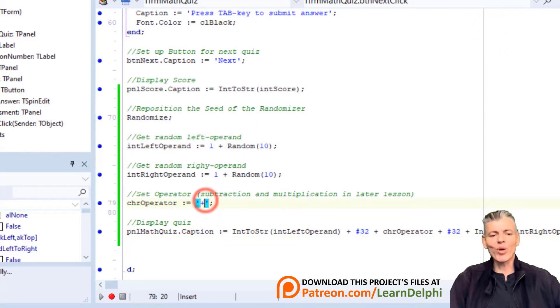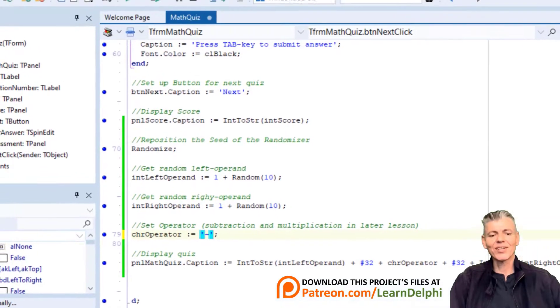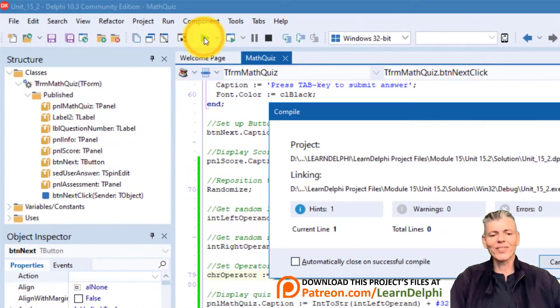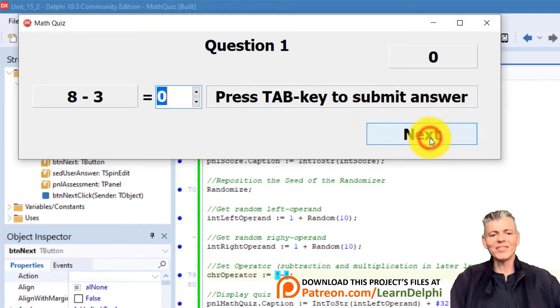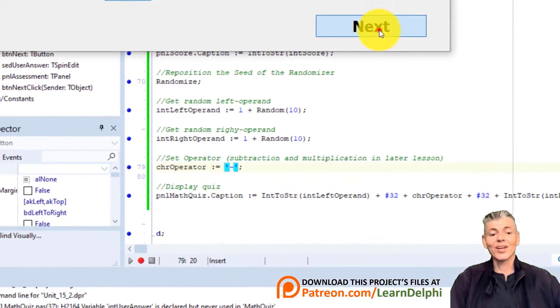Go back to the statement where we assign the plus to chrOperator. Change the plus to a minus. Run the project. Click the button. Look at the random question. It gives us a subtraction now. Close the form.